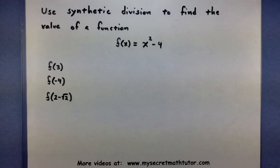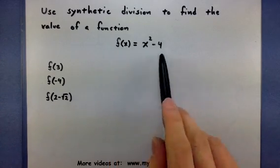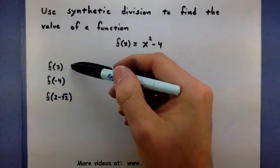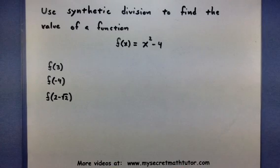To give you an idea of what we're going to do, I have a function here: f of x equals x squared minus 4, and I want to find out the value for a few various inputs like 3, negative 4, and 2 minus the square root of 2.